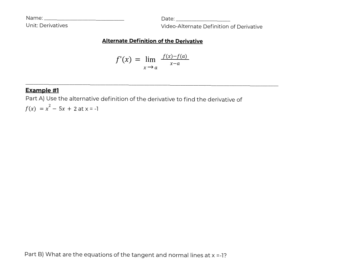Hi everyone. In today's lesson we're going to talk about something called the alternate definition of the derivative. So f prime of a is equal to the limit as x approaches a of f of x minus f of a over x minus a. This gives us f prime of a, which means the slope of the tangent line at x equals a. This alternate definition doesn't find f prime of x, but skips right to the slope of the tangent line.